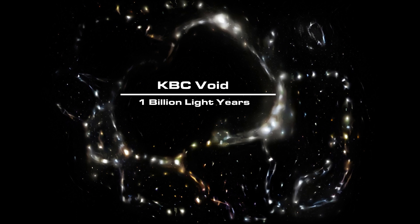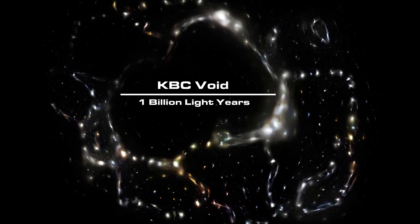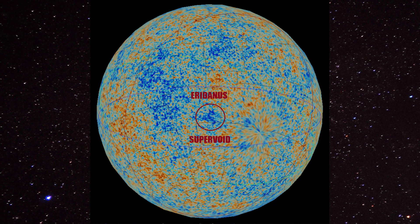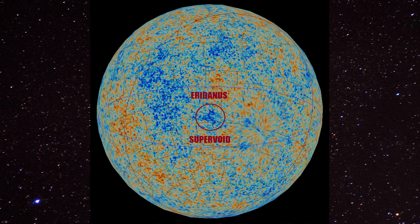At roughly 1 billion light years wide, this is one of the largest known voids. Voids along with superclusters are believed to be the largest things in the universe, and the largest of these voids is thought to be the Aridinus supervoid.